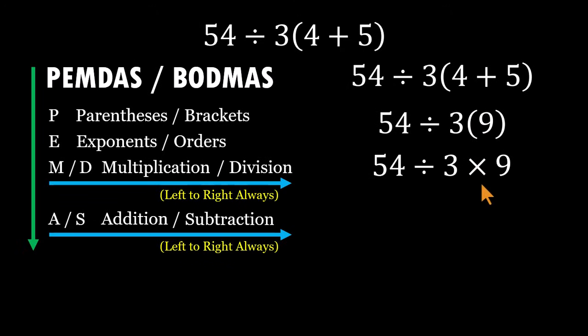This is exactly where the common mistake happens. Because people see the number touching the parentheses and assume multiplication must go first. But it doesn't. Multiplication is not superior to division. They're equals. And when equals stand side by side, we move left to right.